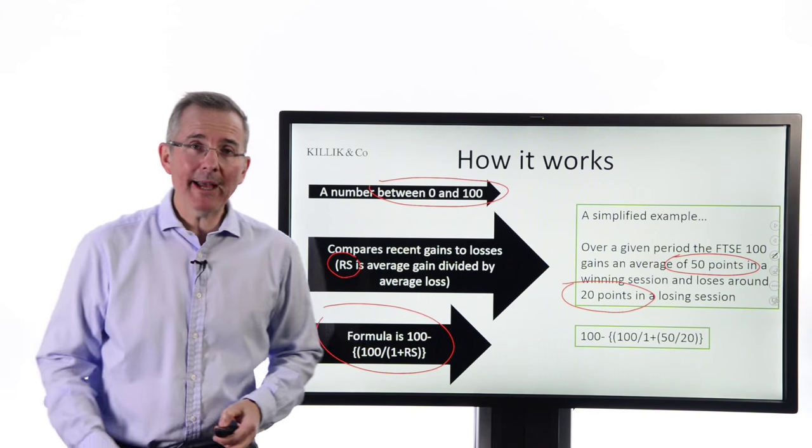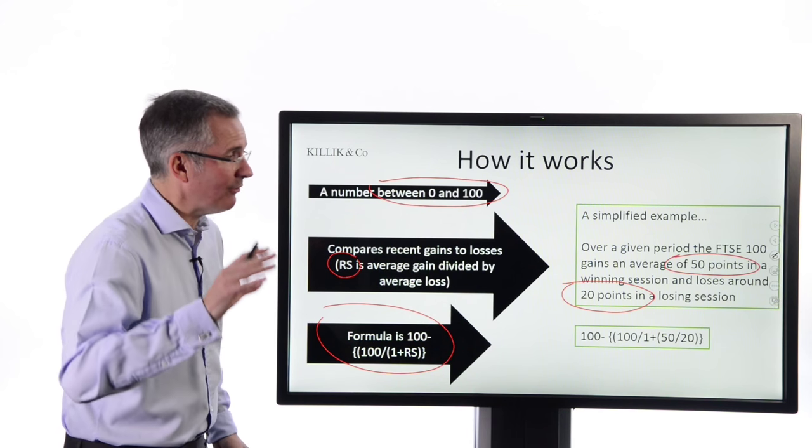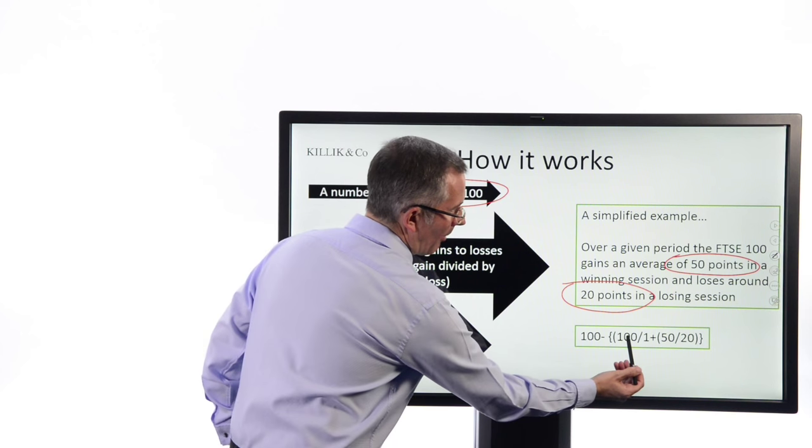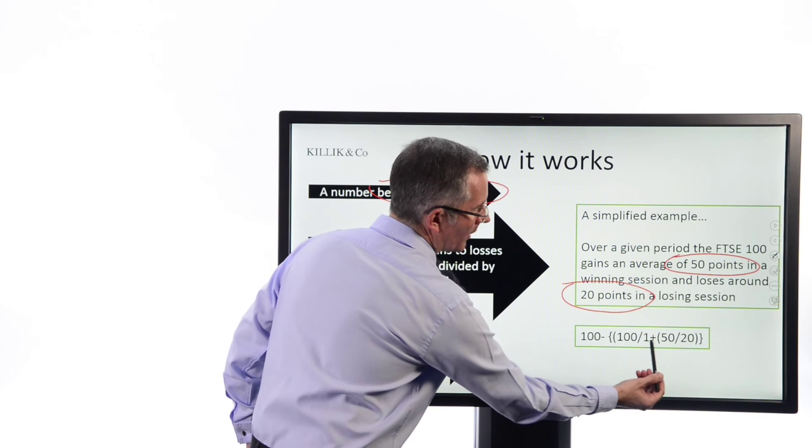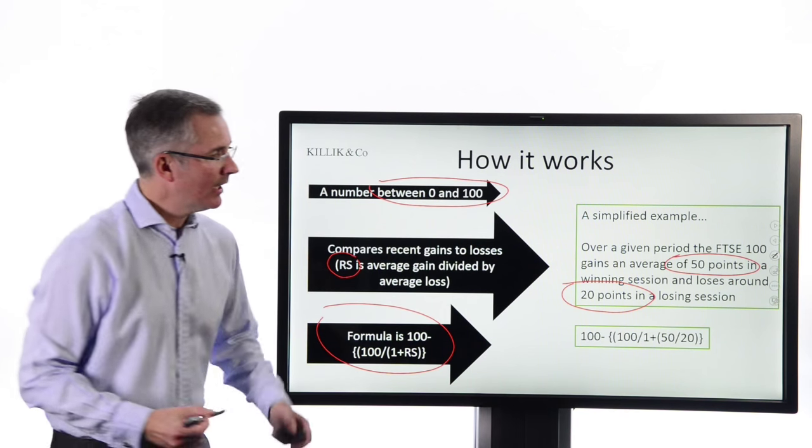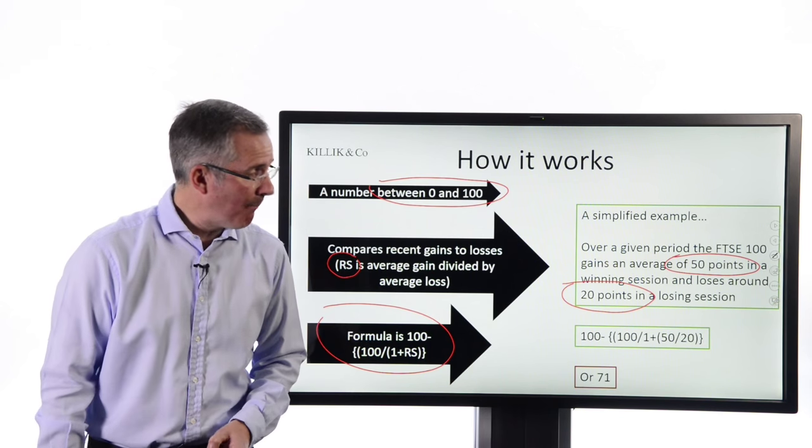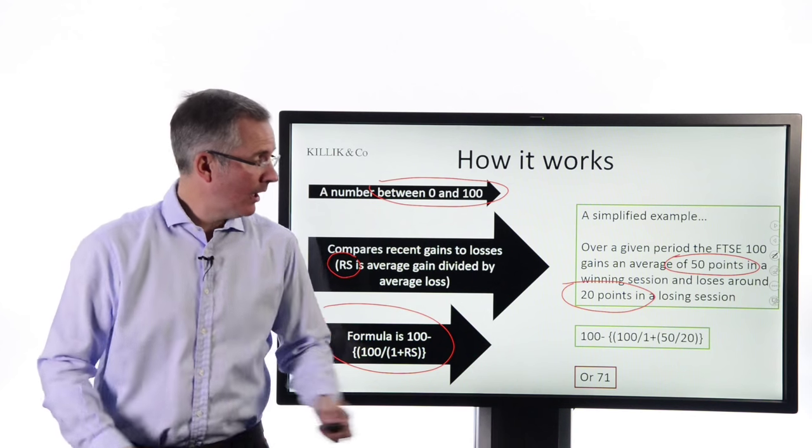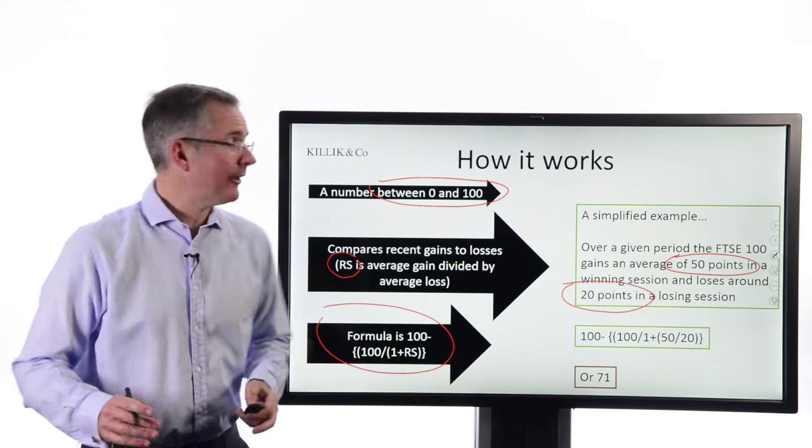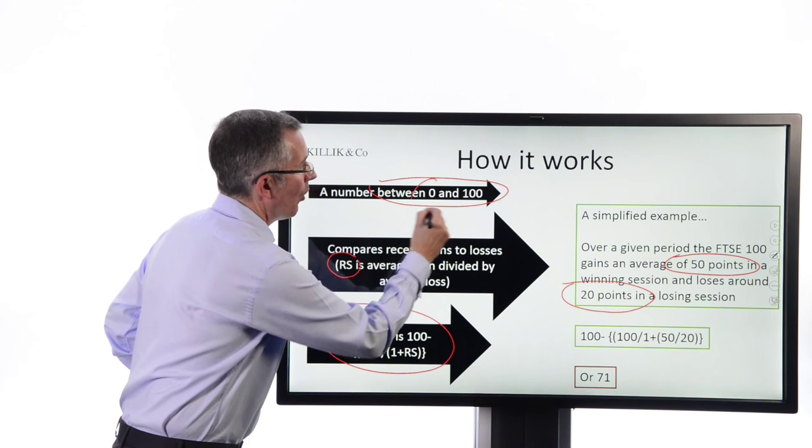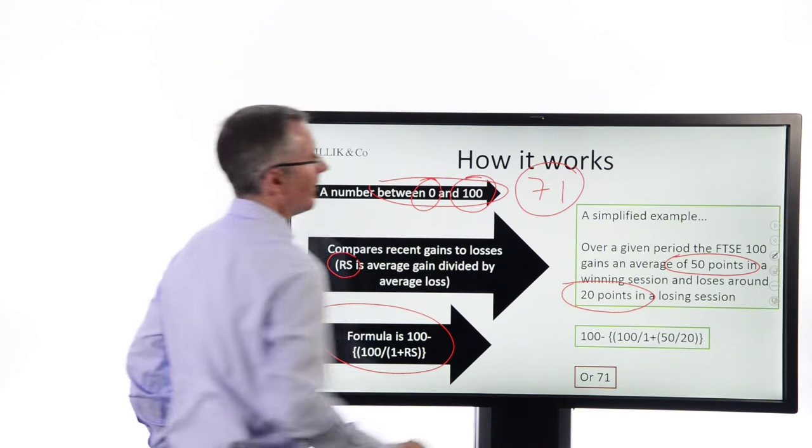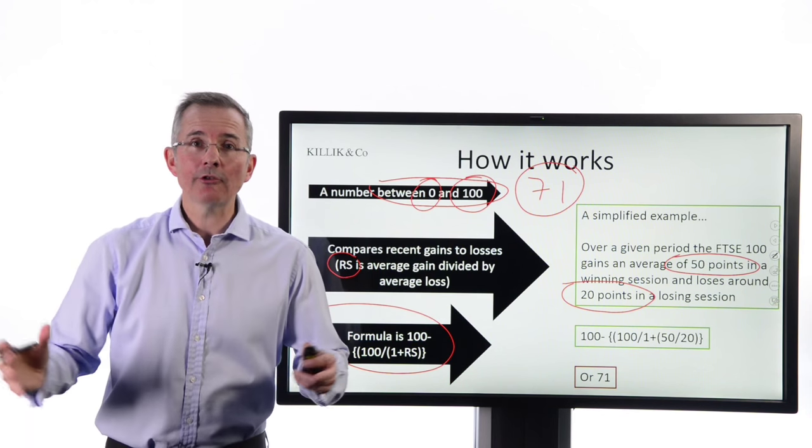Plugging that information into that formula, 100 minus 100 over 1 plus the gains on average divided by the losses on average gives you a number. And it's the number most people want of 71. And as it happens, that's a relatively high RSI. I said the range was 0 to 100. So 71 looks to be taking you towards the upper reaches. So what?